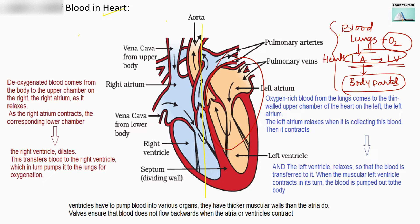Now let us see what the right part of the heart does. Deoxygenated blood comes from the body to the upper chamber on the right — the right atrium. This blood coming from the body parts is impure, or rich with carbon dioxide. It comes to the right atrium, which relaxes to receive the blood, then contracts and pushes the blood to the right ventricle. From the right ventricle, it pumps blood to the lungs for oxygenation.